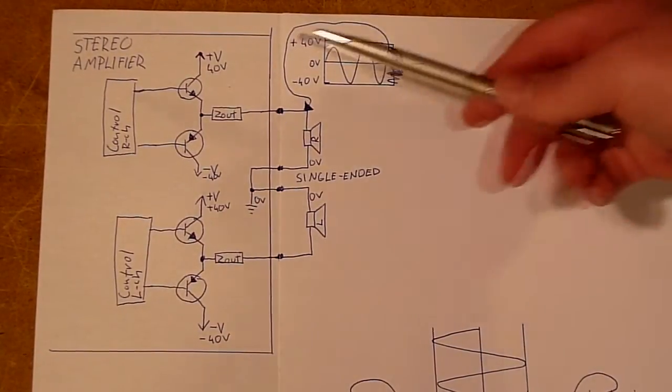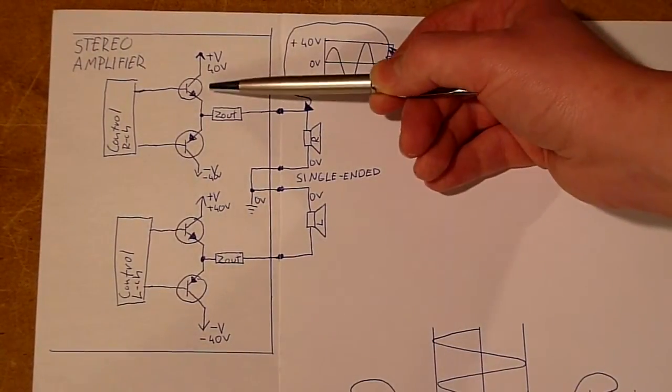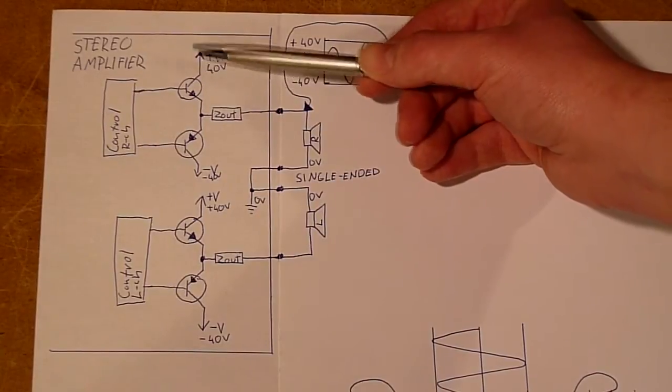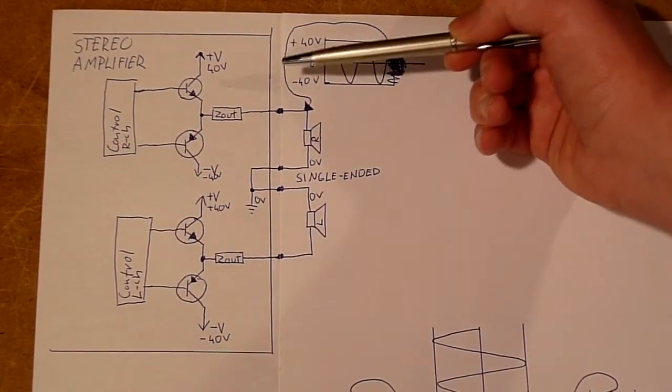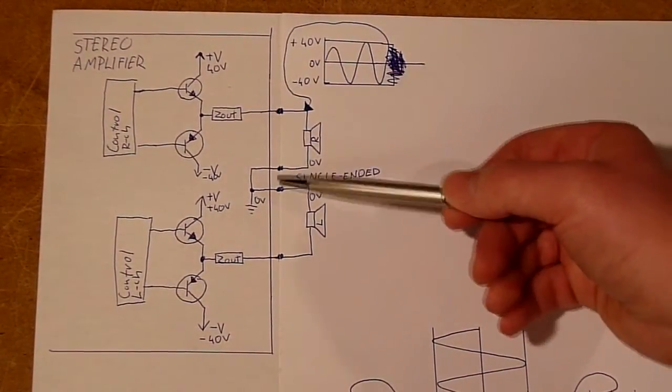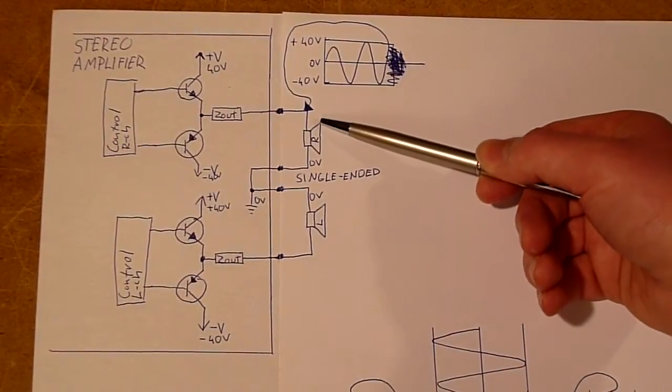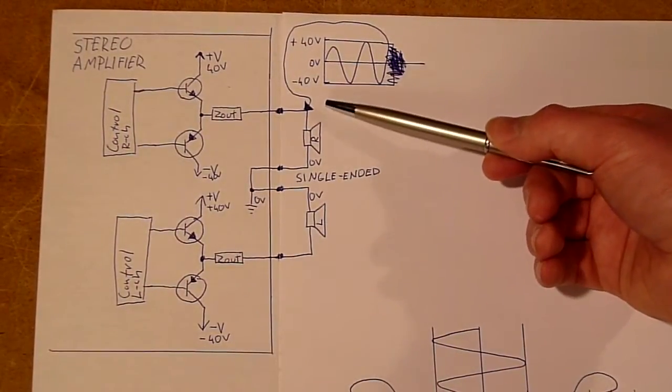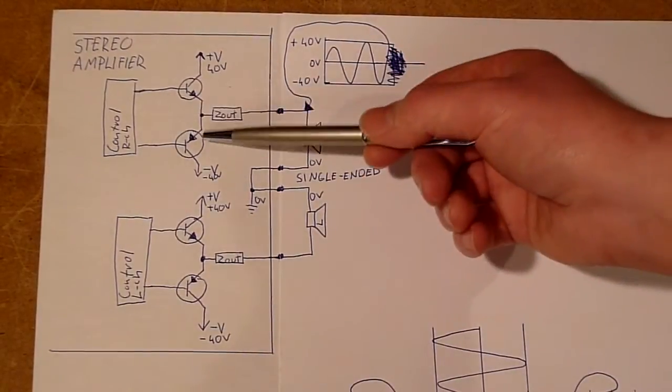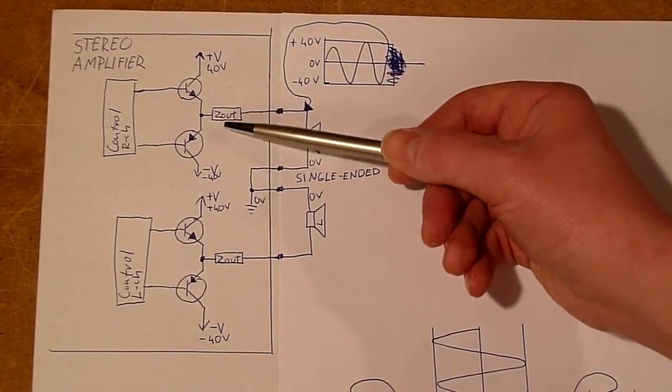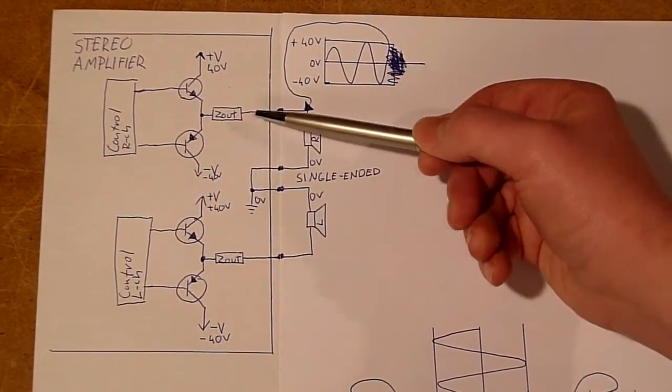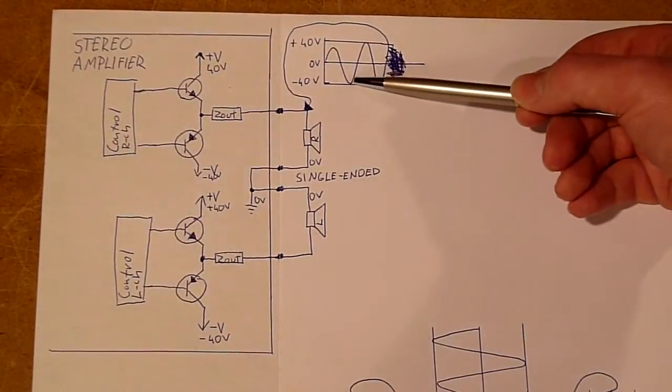So what this means is amplifier 1 can use its PNP transistor here to pull the output high which in relation to ground and the speaker sees a positive voltage and moves accordingly.